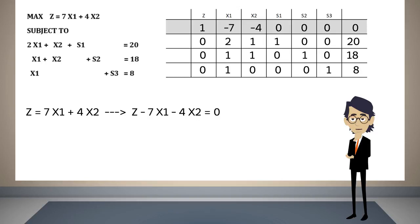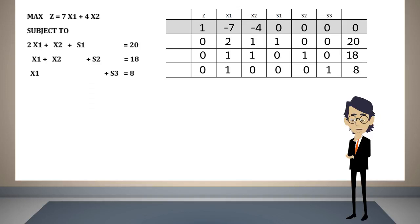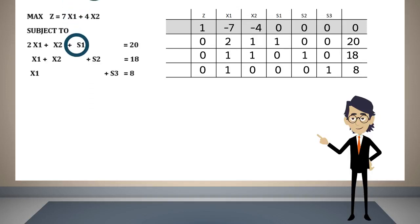Recall that in the algebraic method we tried to find a solution to the system of equations. To recognize the variables that have a value different from zero versus those which are zero-valued, we looked for the variables that appeared in only one equation with coefficient one. In the simplex table it is even easier to find them, since these variables will have coefficient one in one row and zeros in all the other rows.